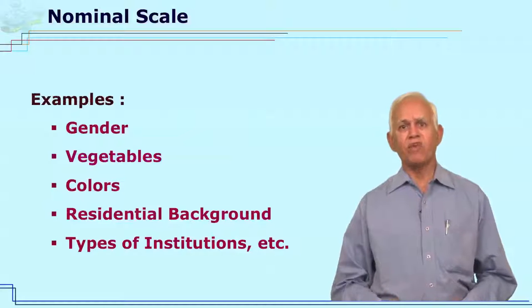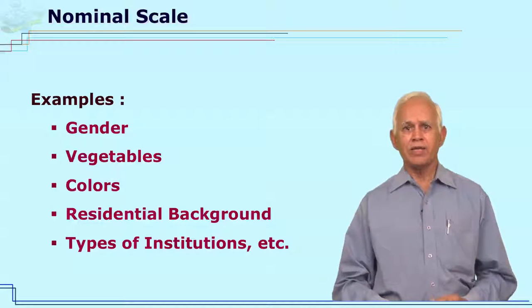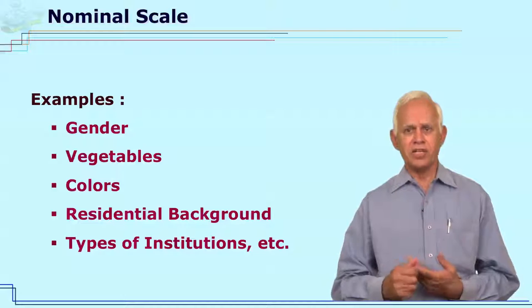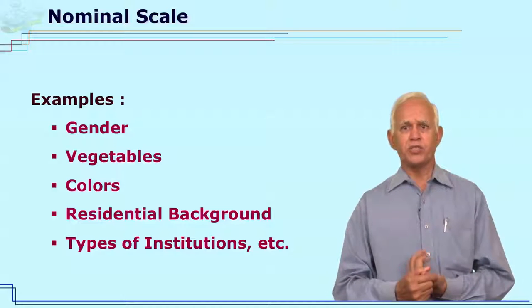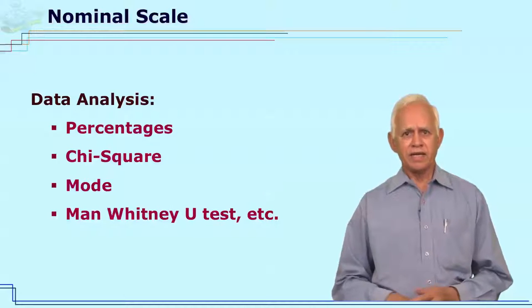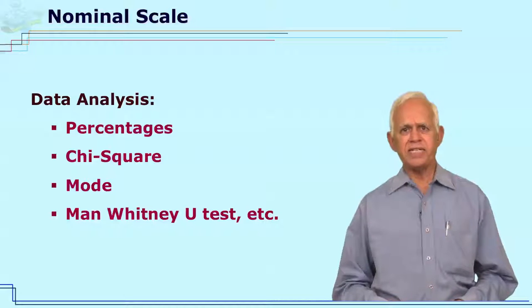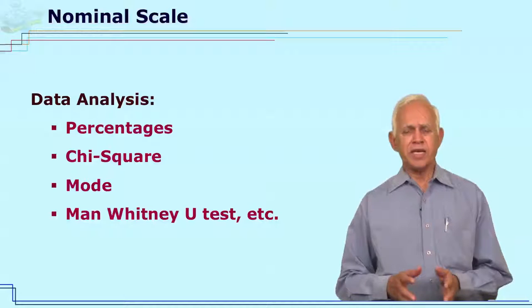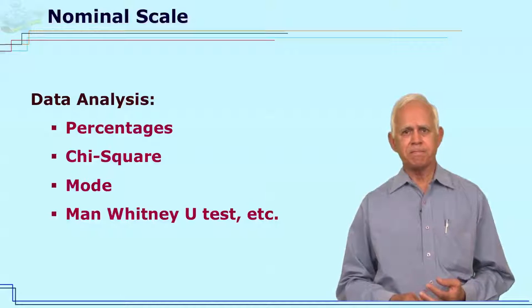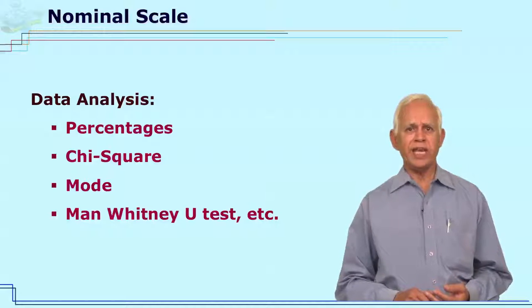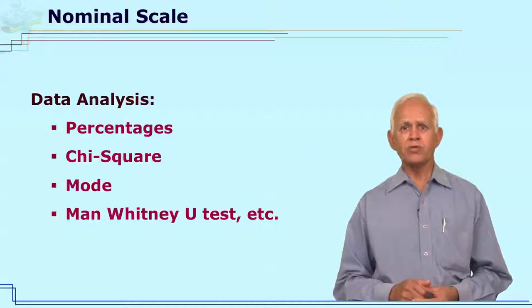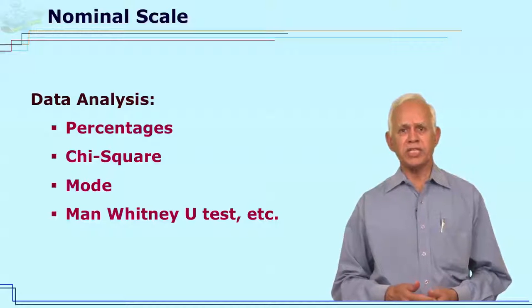The different examples of nominal scale data are gender, vegetables, colors, the residential background, the types of institutes, etc. The analysis of nominal scale data can be done through different statistical techniques. In case of nominal scale data, we can calculate percentages, we can also analyze with the help of a chi-square test, we can also calculate mode, we can also use Mann-Whitney U-test, etc.